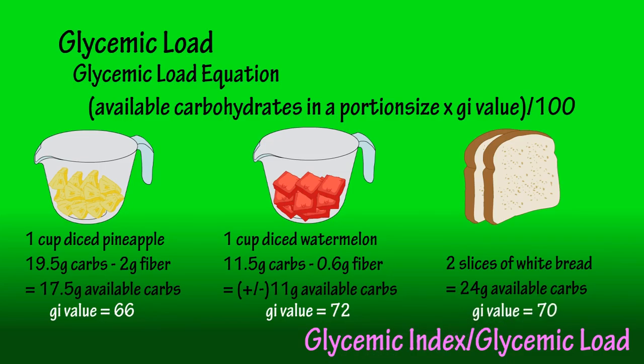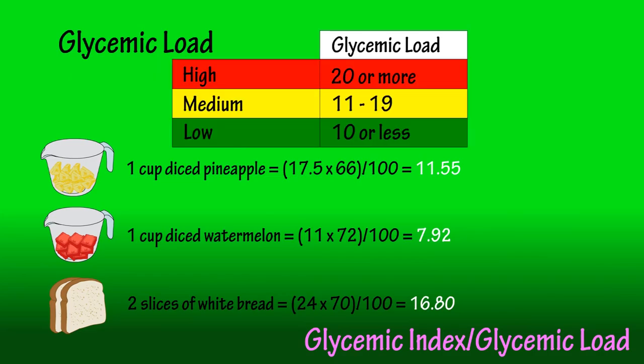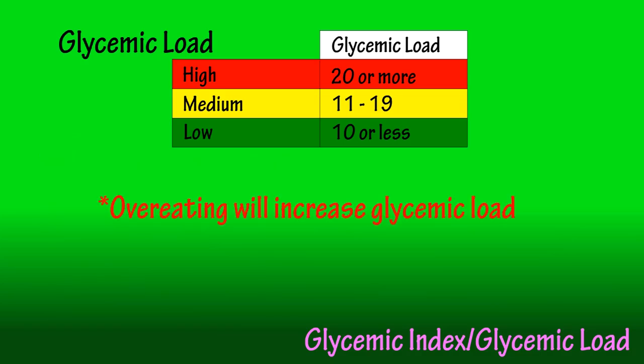I'm going to put the glycemic load calculations on the screen. The glycemic load for the serving of pineapple is 11.55, watermelon is 7.92, and white bread is 16.8. This puts watermelon in the low glycemic load category, and pineapple and white bread in the medium glycemic load category. As you can see, the glycemic load takes into account the portion size. However, overeating any food will dramatically increase its glycemic load.